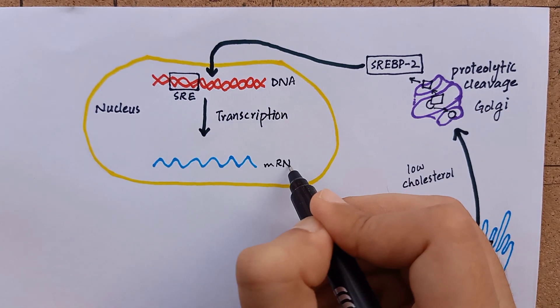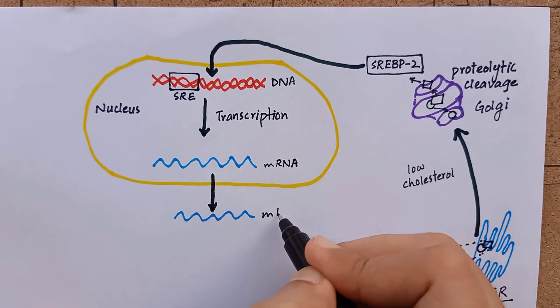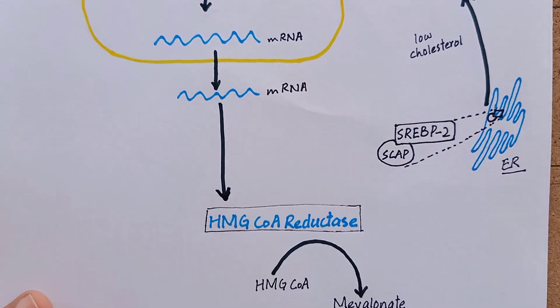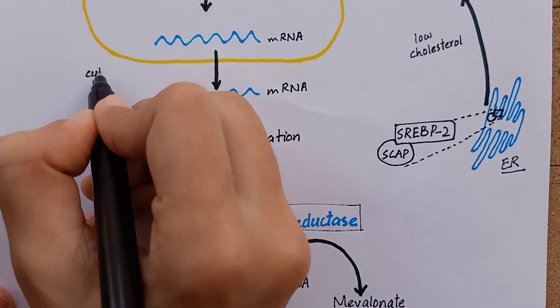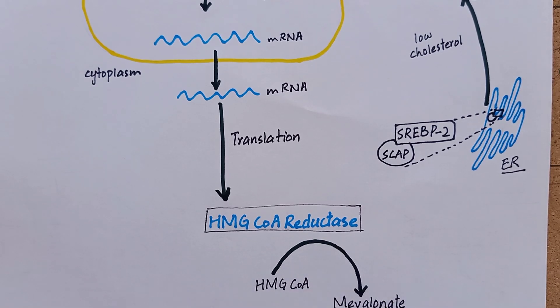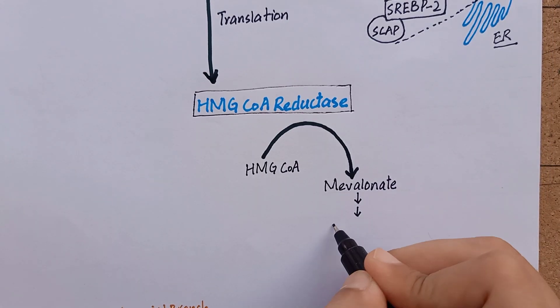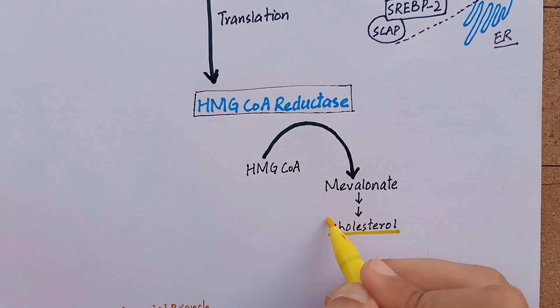Transcription produces messenger RNA inside the nucleus and the process of translation produces our desired protein HMG-CoA reductase in the cytoplasm. Increased HMG-CoA reductase will result in increased cholesterol synthesis.